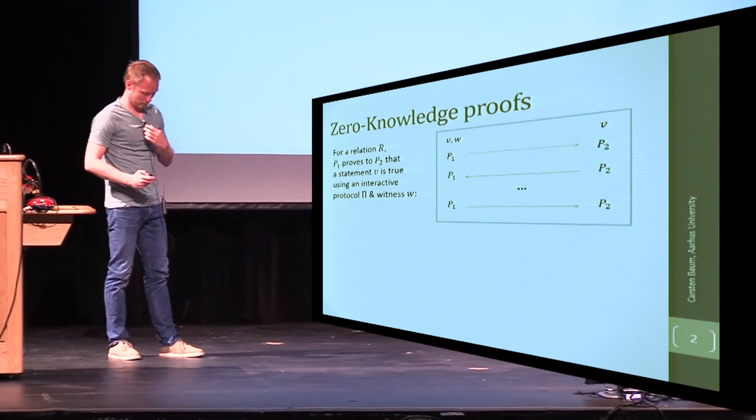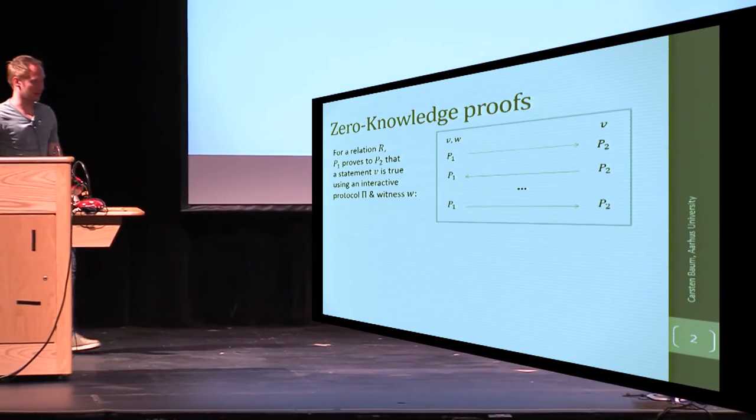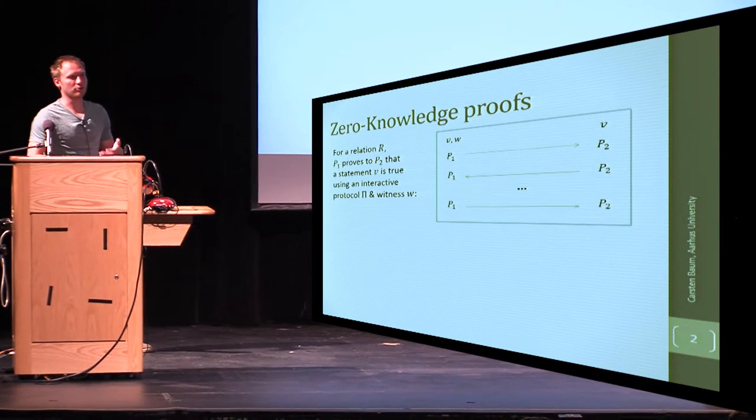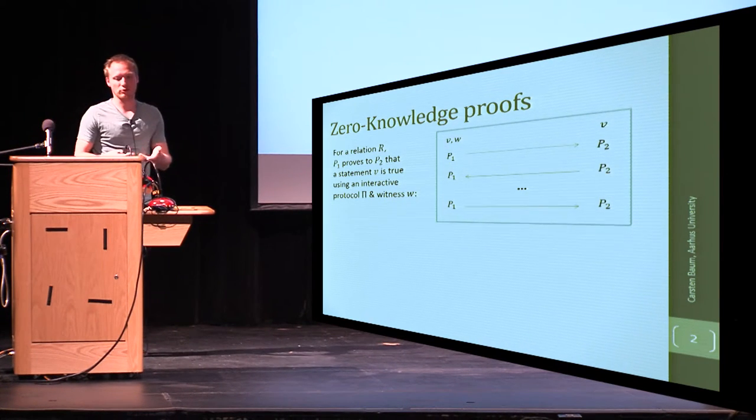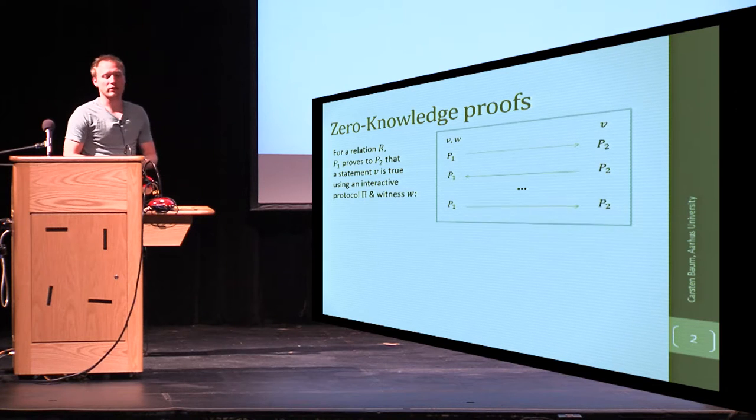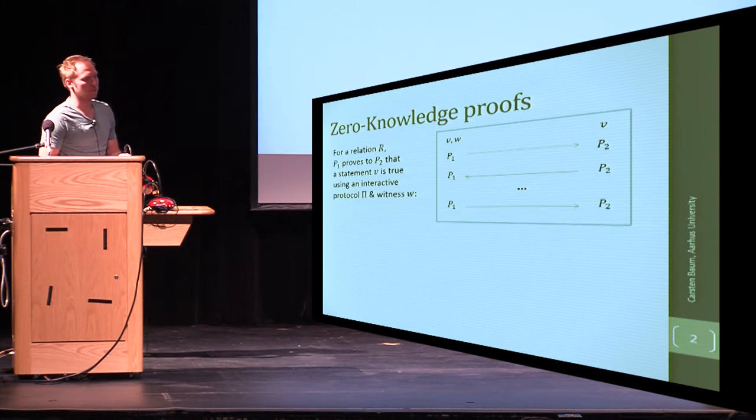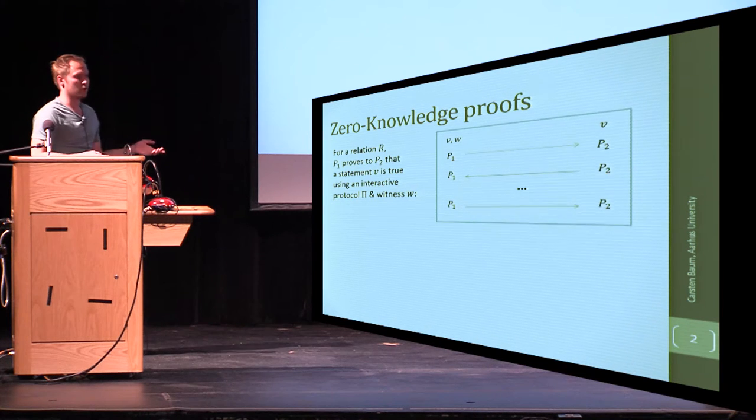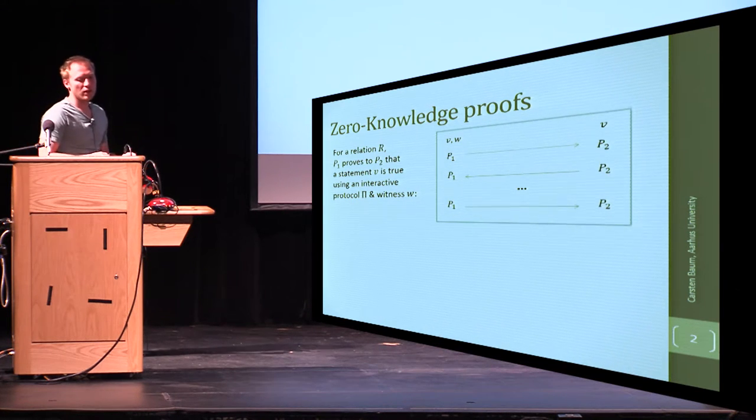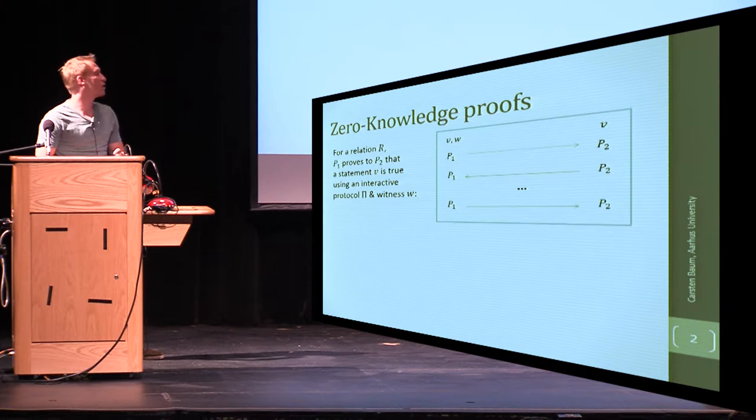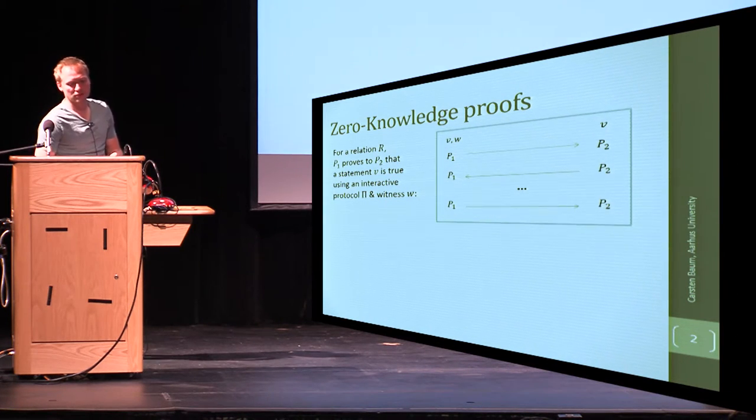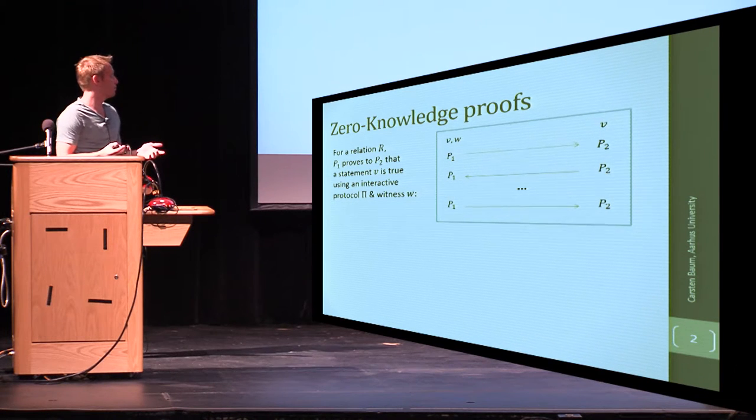It's a very short reminder about what are zero-knowledge proofs. Just to recap so we all know what we're talking about. We have a relation R and we have a prover P1, a verifier P2. There's a statement V both the prover and verifier are aware of.